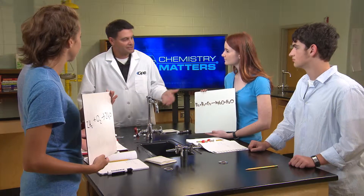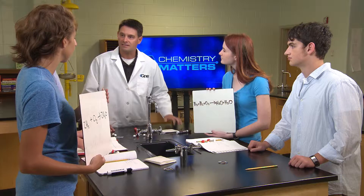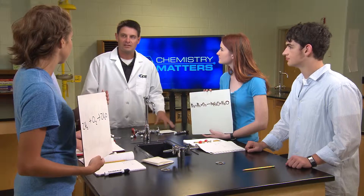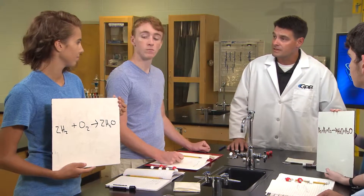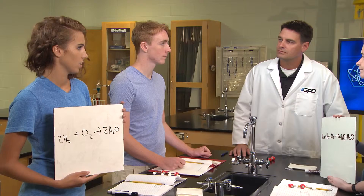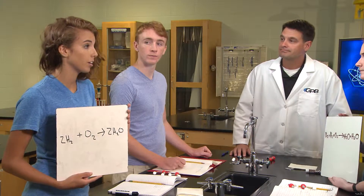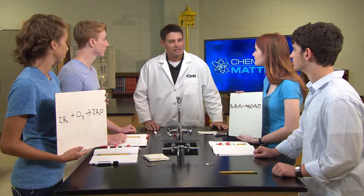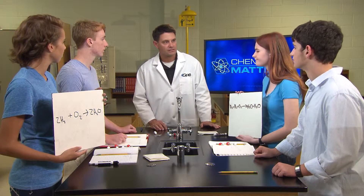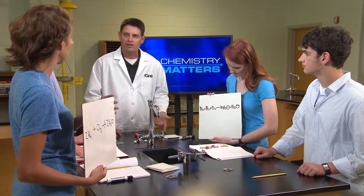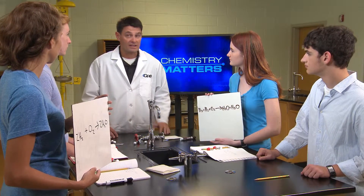No substance was created and no substance was destroyed. Chemists usually write balanced equations with like terms grouped together. Since hydrogen is a gas, you could write (g) for gas and (l) for liquid water. Coefficients are the numbers found in front of a chemical substance representing the quantity needed for the reaction to occur. In a balanced equation the total number of each type of atom will be the same on both sides.